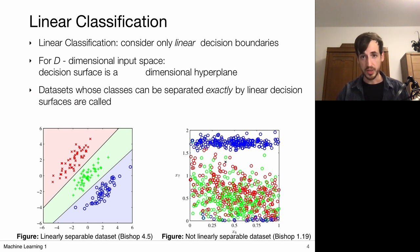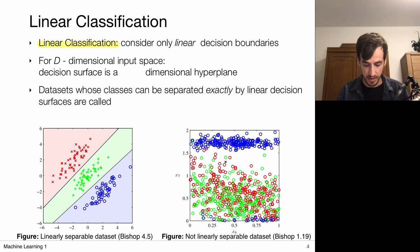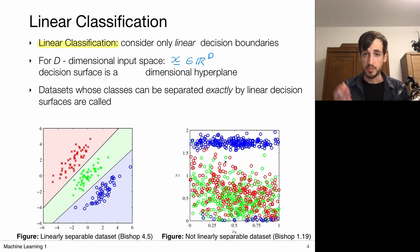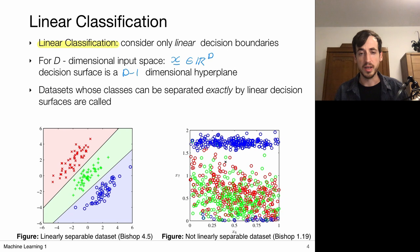Now there exists a particular class of classifiers that considers only linear decision boundaries, called linear classification methods. If my data is distributed like this, a linear classifier would draw straight lines to divide the data. Each data point lies in a d-dimensional vector space, and the input space is split via decision surfaces which are d-1 dimensional hyperplanes. In 2D these are lines, in 3D these are planes, and in higher dimensions we call them hyperplanes.